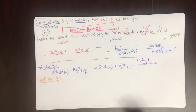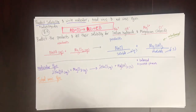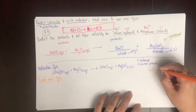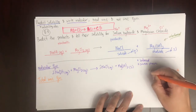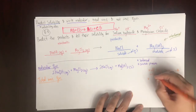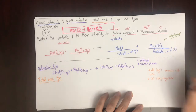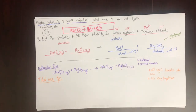Now let's move on to the total ionic equation. The total ionic equation is where everything that is aqueous breaks into ions. Things that are solid will stay together. This is because aqueous substances break apart into ions due to the ion-dipole interaction with polar water; if something is solid, it does not break apart into ions.